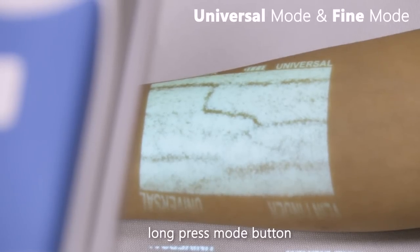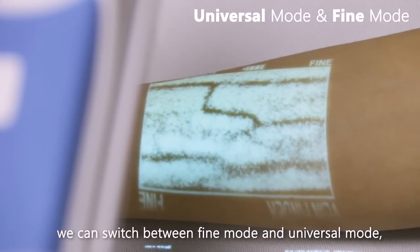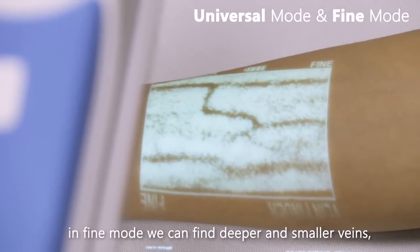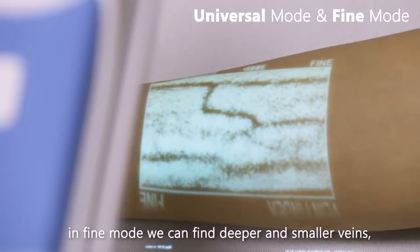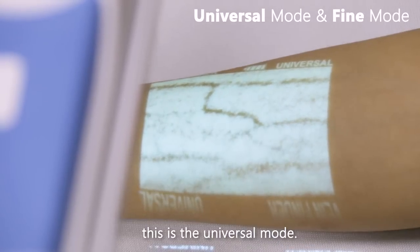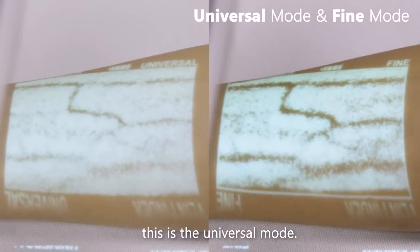Long press the mode button to switch between fine mode and universal mode. In fine mode, we can find deeper and smaller veins. This is the universal mode, and this is the fine mode.